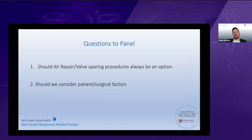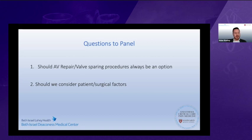The question to the panel: this was a similar presentation. Should aortic valve repair or valve-sparing procedures always be an option? Or should we consider patient and surgical factors? This case was done over the weekend, after midnight. Do we think valve-sparing procedures should always be an option, or do we need to take other factors into account?